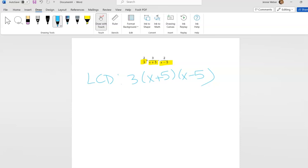Then I'm going to go to each one and ask what's it missing out of this LCD. In this case, it's missing both of these, so I'm going to multiply this by (x+5)(x-5), top and bottom.